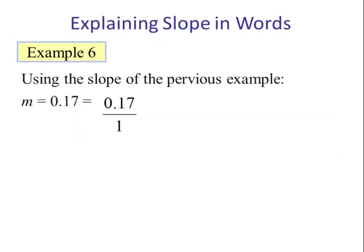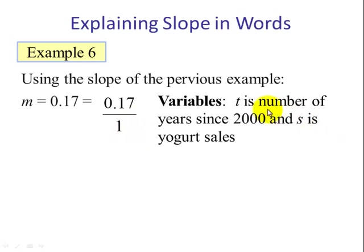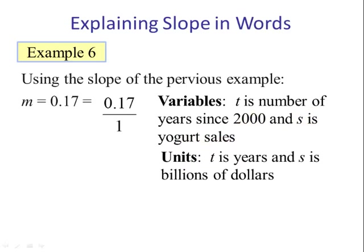Let's do an example. Use the slope of the previous example in the video where m was equal to 0.17. We begin by saying slope is a comparison of the rise over the run, so this is 0.17 over 1. If you recall, t is the number of years since 2000 and s is the yogurt sales. The units for t is years.